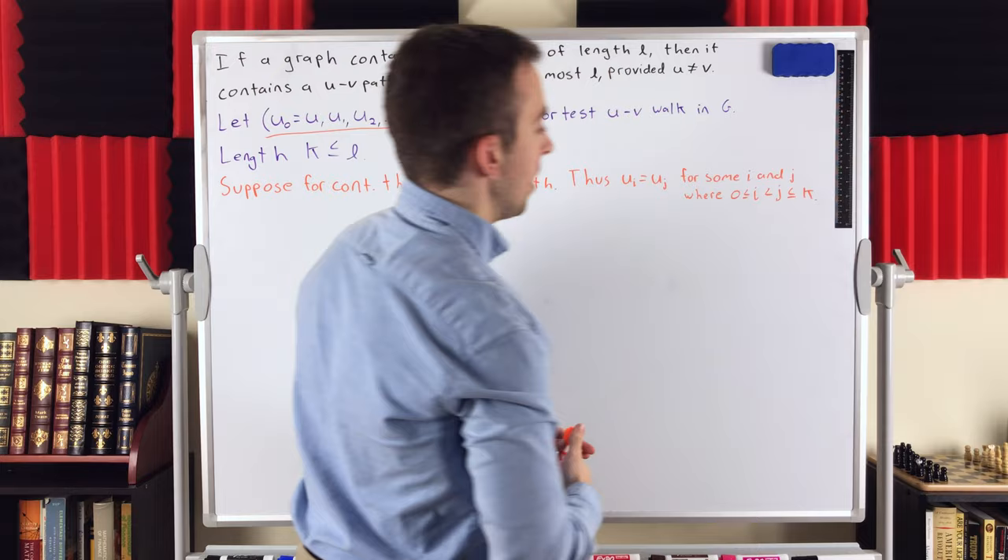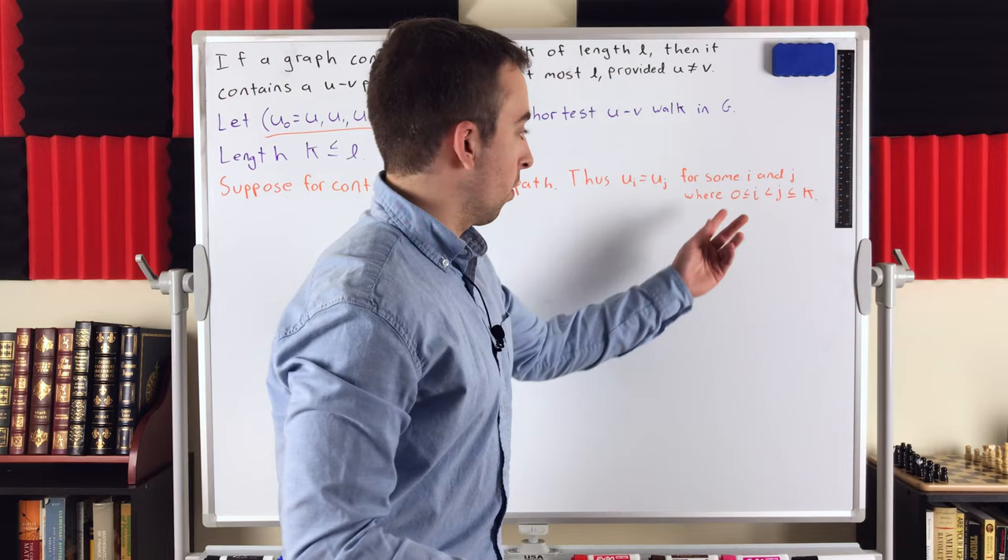So we know there's some vertex UI in this walk that's equal to the vertex UJ in the walk. For some I and J, where zero is less than or equal to I is less than J, and they're less than or equal to K. Now, I is less than J, or J is less than I, doesn't matter. We'll just say that I is less than J.